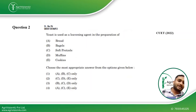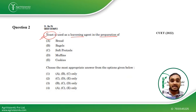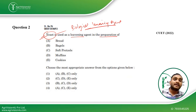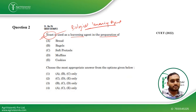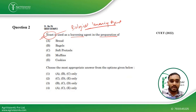Coming to the next question: yeast is used as a leavening agent in the preparation of which products? Yeast is a biological leavening agent — it is of biological nature. Other leavening agents can be chemical in nature. Apart from those, water as steam and air can also be used as leavening agents.